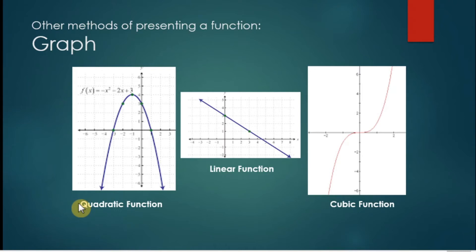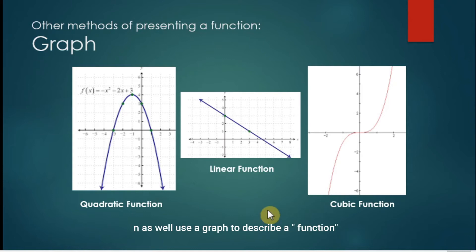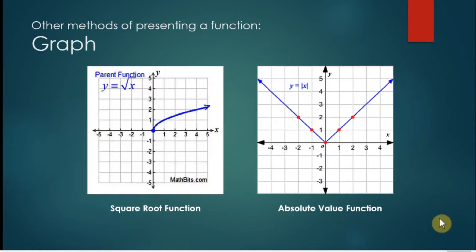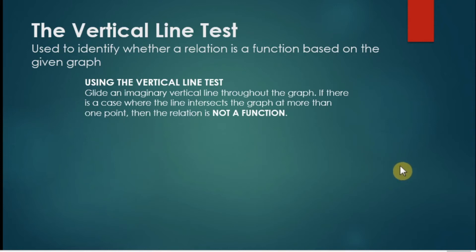In our previous video we mentioned that a relation can be represented by graphs, especially when working with infinite sets. Since a function is a special relation, you can also use a graph to describe it. Here is a graph of a quadratic function, called a parabola. This is the graph of a linear function, and this is the graph of a cubic function. Here are other functions with their corresponding graphs: this is the square root function and this is the absolute value function.